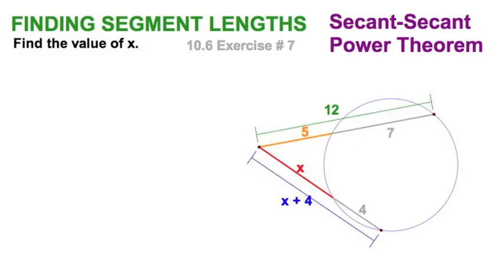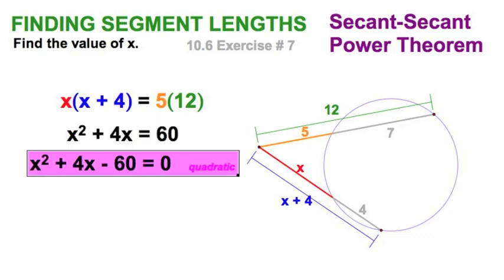So, when we do this, set this up, red times blue equals orange times green. So, expand this, and we can see the generation of an x squared term, and right away we say, aha, that looks like a quadratic. Let's subtract 60 from both sides.